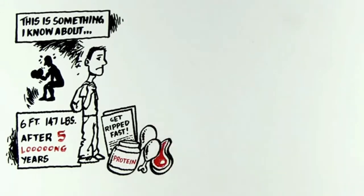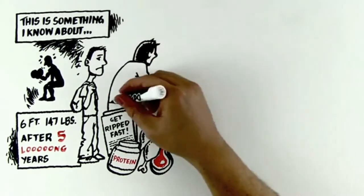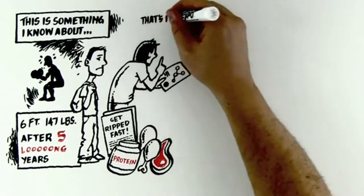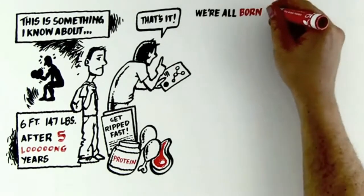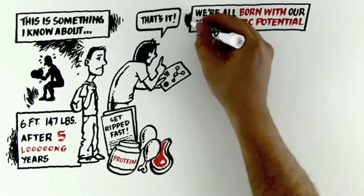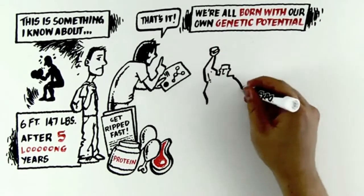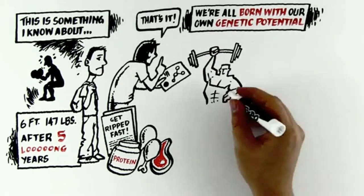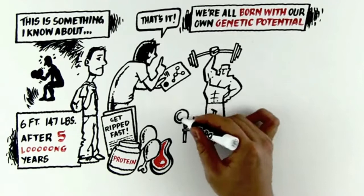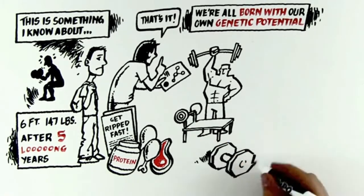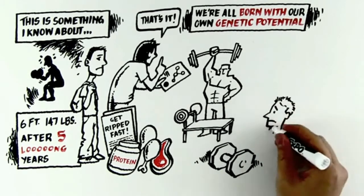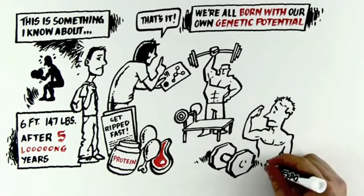That is until I cracked the muscle code and found the formula that works for genetically challenged guys like us. You see, we're all born with our own genetic potential. That's why you know certain guys who can get jacked up just by tiptoeing around a weight bench. While skinny guys or hard gainers, ectomorphs, whatever you want to call us, can lift a barbell a thousand times and not gain an ounce of muscle.